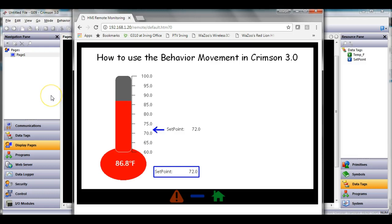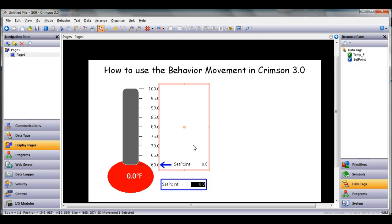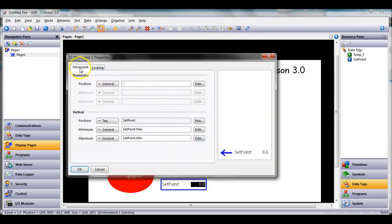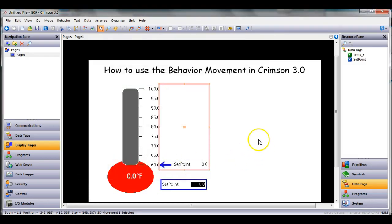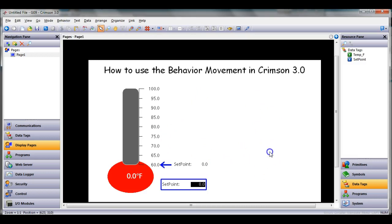That's just a quick easy way to use the behavior movement in Crimson 3. The one important part of this is on your graphic, the part that everybody forgets, is when you right click on the properties of your 2D movement, which you would have gotten by the behavior pulldown, you've got to link it to the tag. The vertical will go up and down, the horizontal will go left and right. They also have another movement function called 2D polar movement which you can really move things all around.